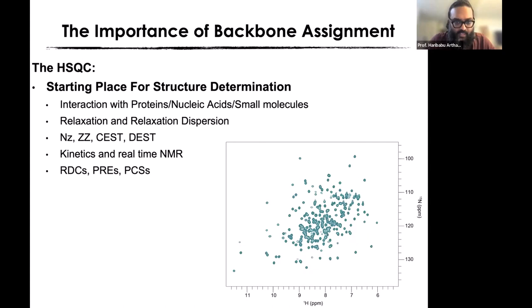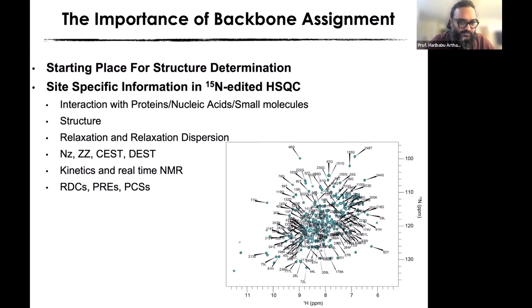The bottleneck in using the spectrum is our ability to correlate each one of these dots back to an amino acid in the primary sequence. Without that, all we can say is that whatever we add to it — a drug or another protein — binds and changes the electronic environment, which changes the peak position or resonance position, what we call chemical shift perturbation. Once we have the resonance assignment, we can say what the binding surface is, whether it's direct or allosteric.